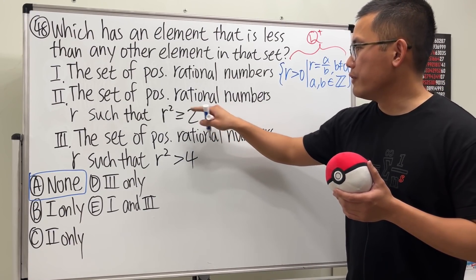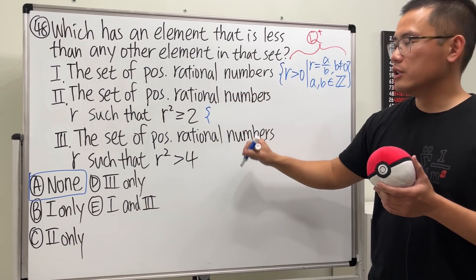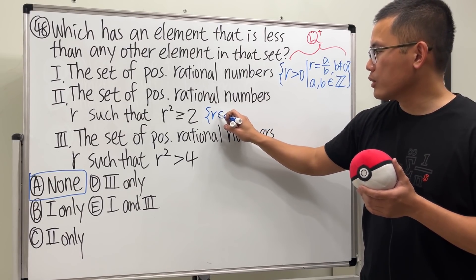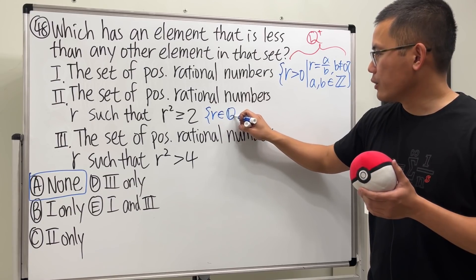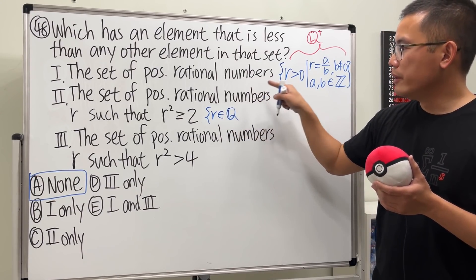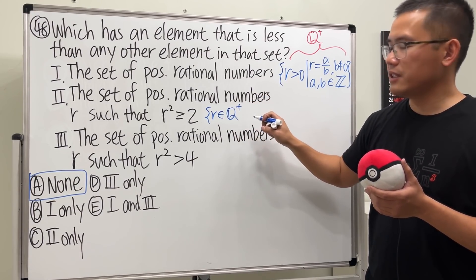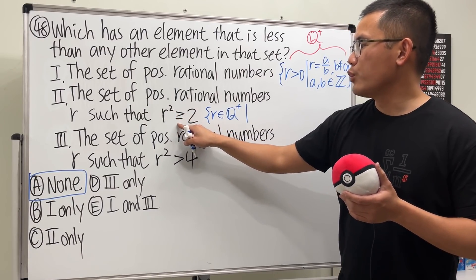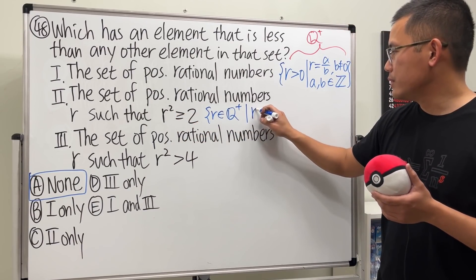Now for number two, we want the set of positive rational numbers, so we can say r and we can say that first we want r to belong to Q plus. So that means r is a rational number and that's also going to be positive, such that we want r squared to be greater than or equal to two. So we put that down right here.